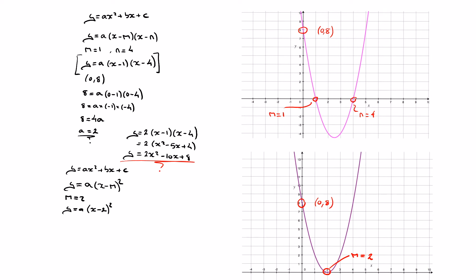To find a, we use the coordinates of the y-intercept, zero and eight, replacing y by eight and x by zero. That gives eight equals a times zero minus two squared, which leads to eight equals a times negative two squared, and since negative two squared is four, we get eight equals four a.